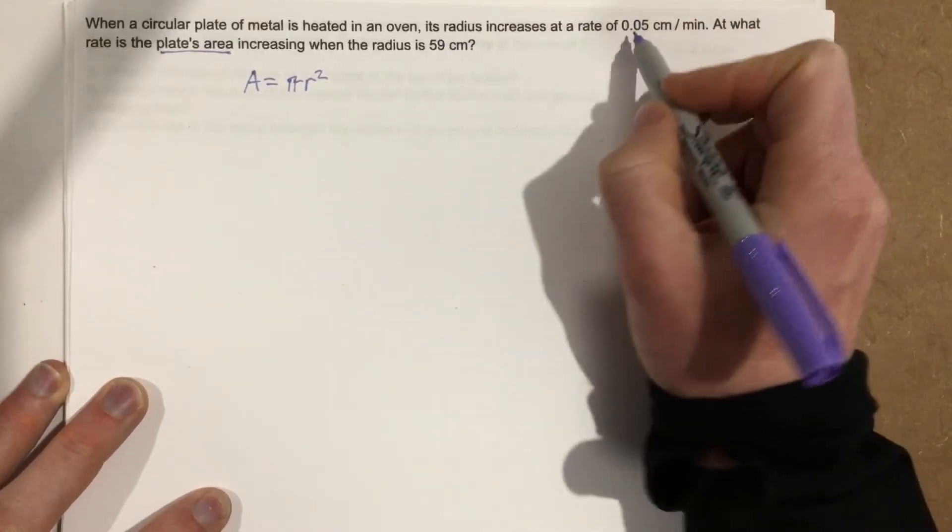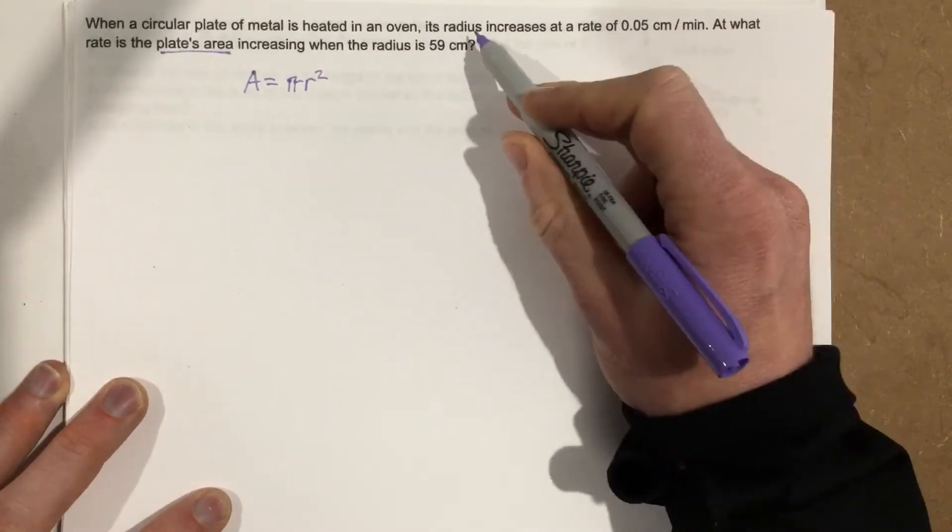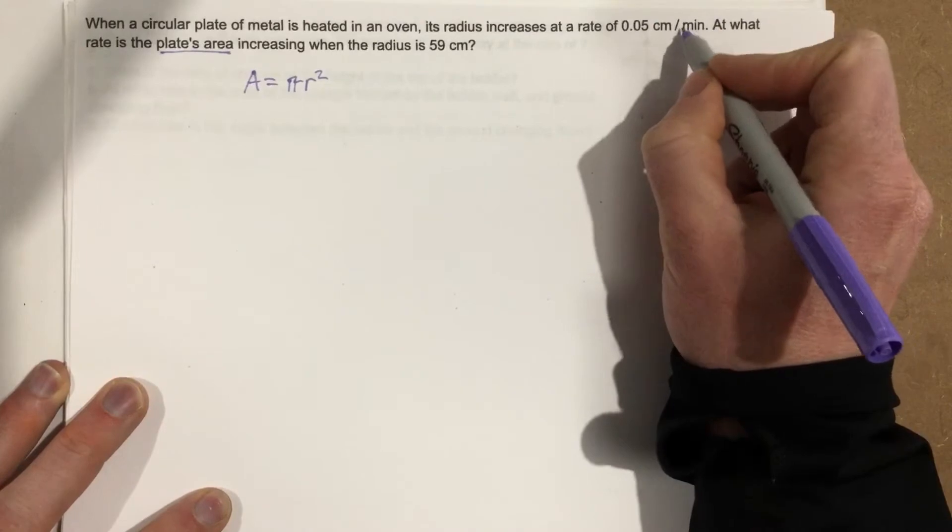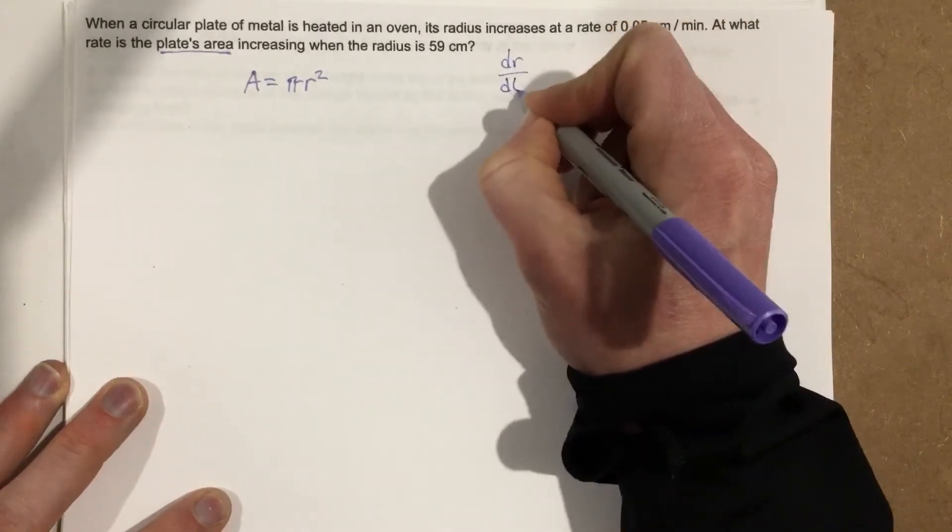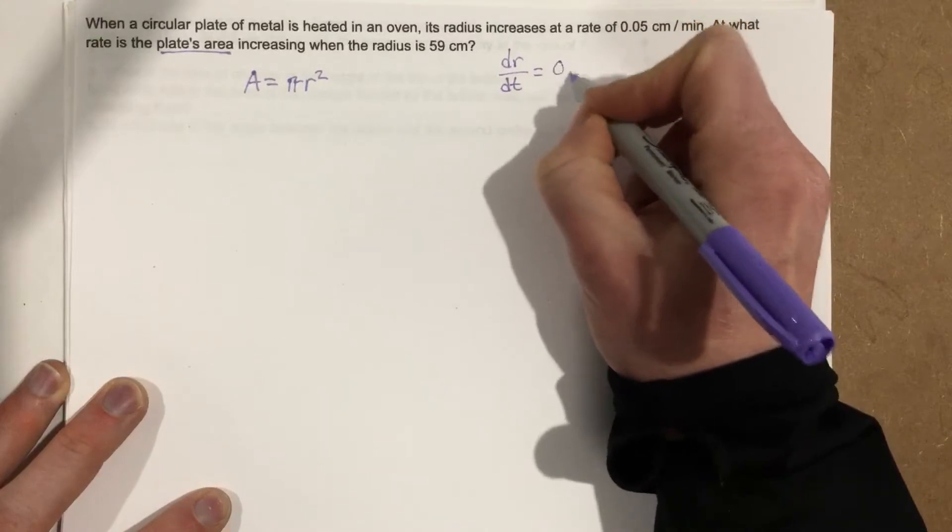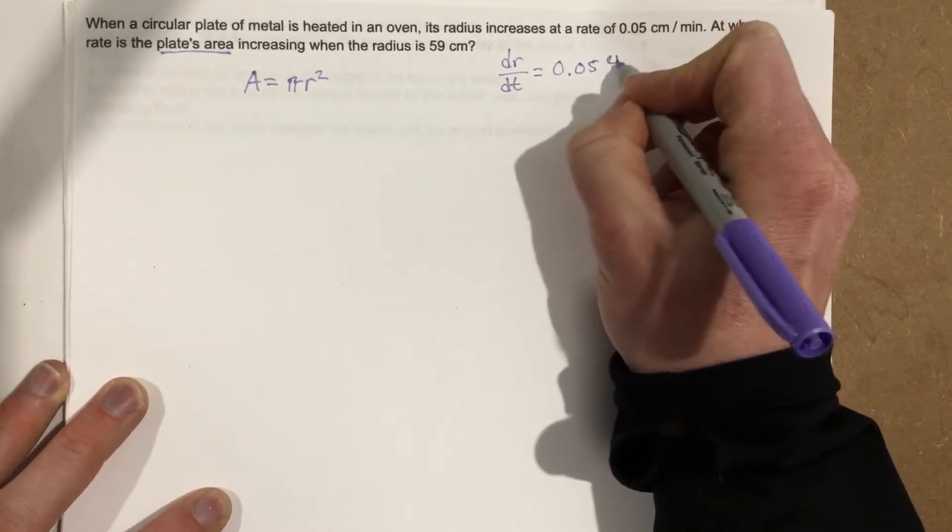They say its radius increases at a rate of 0.05 centimeters per minute. So radius is increasing with respect to time because it says per minute. So we can say that dr over dt is equal to 0.05 centimeters per minute.